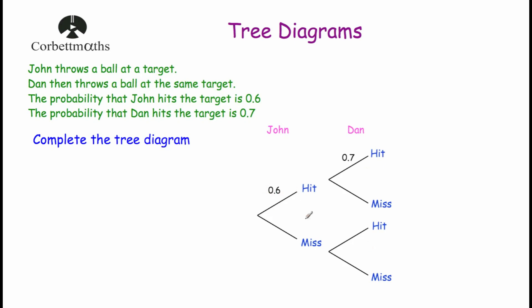Now let's look at our probabilities. We've got a pair of branches representing John throwing the ball at the target. He can hit or miss. If the probability of John hitting the target is 0.6, then the probability of him missing is 0.4, and these branches always add to one. For Dan, we have two pairs of branches — one for if John hits and one for if John misses. The probability of Dan hitting is 0.7 and missing is 0.3, and the same probabilities apply to both of Dan's branch pairs.